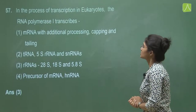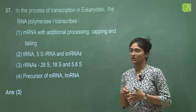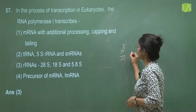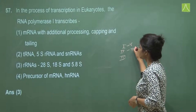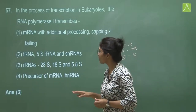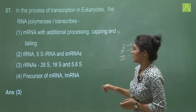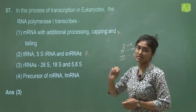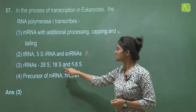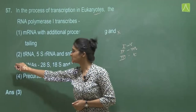Question 57 asks what RNA polymerase I transcribes in the process of transcription in eukaryotes. There are three types of RNA polymerases: RNA polymerase I transcribes rRNA, RNA polymerase II transcribes mRNA, and RNA polymerase III transcribes tRNA. Since they are asking about RNA polymerase I, we eliminate mRNA and tRNA options. We are left with ribosomal RNAs 28S, 18S, and 5.8S, which are the ribosomal RNAs of eukaryotes. The answer is option three.